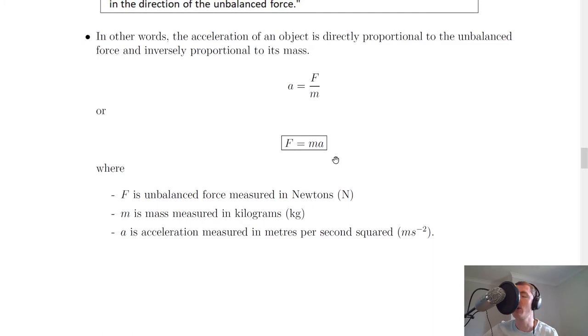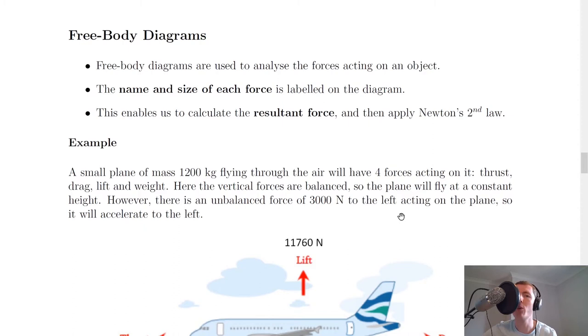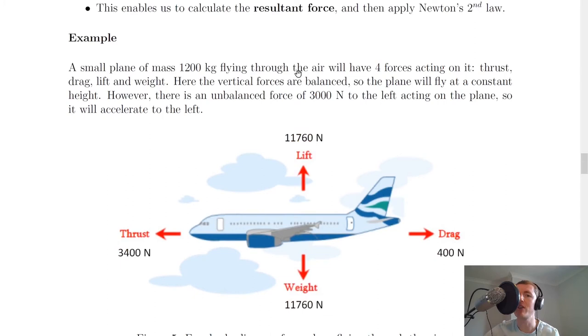So all we're seeing with this equation, and with Newton's second law, is that when a mass has an unbalanced force acting on it then it will accelerate in the same direction as that unbalanced force. Related to Newton's second law are free body diagrams, and these are really useful when you want to analyse the forces acting on an object. So the name and size of each force is often labelled on the diagram, usually though you can get away with just putting the names of the forces to show what's happening in a certain situation, and this enables us to calculate the resultant force in a given situation and then apply Newton's second law.